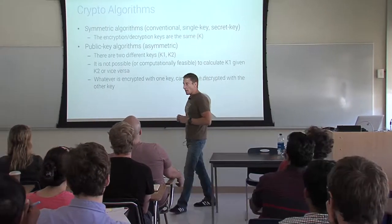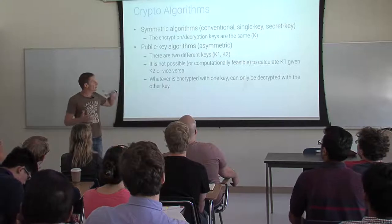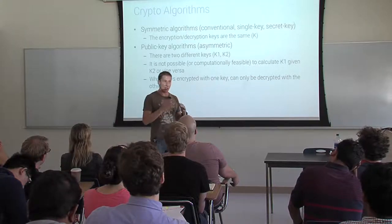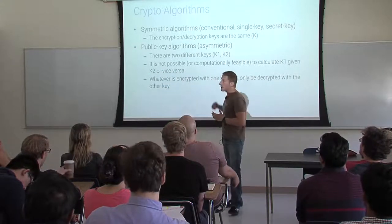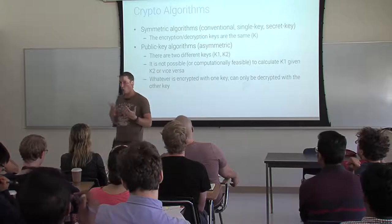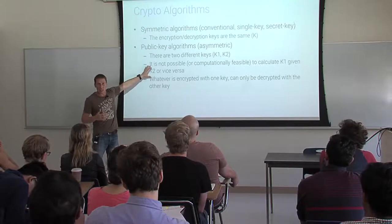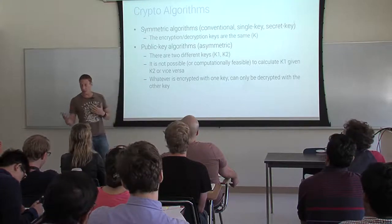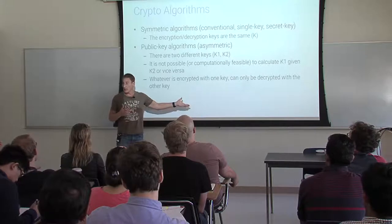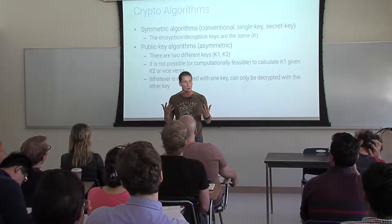There are two main kinds of crypto algorithms. There are symmetric algorithms — also called conventional, single key, or secret key — where the encryption and decryption key is exactly the same. Then we have public key algorithms, called asymmetric, where there are two different keys for encryption and decryption — two different keys such that, given one key, you cannot find the other. Whatever is encrypted with one key can only be decrypted with the other key.